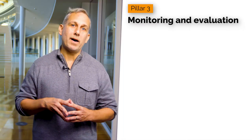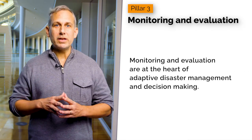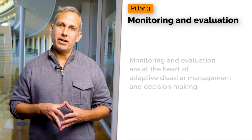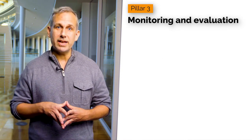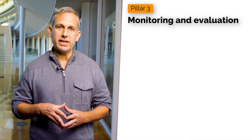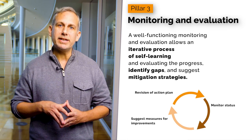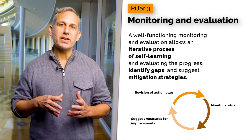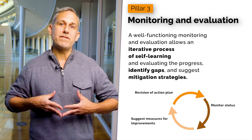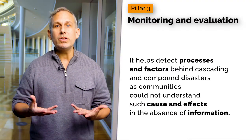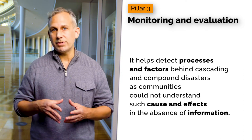Pillar 3: Monitoring and Evaluation. Monitoring and evaluation are at the heart of adaptive disaster management and decision-making. They are critical to understand the risk landscape, which is always changing and evolving in the case of cascading and compound disasters. A well-functioning monitoring and evaluation allows an iterative process of self-learning, evaluating progress, identifying gaps, and suggesting mitigation strategies. It helps detect processes and factors behind cascading and compound disasters, as communities cannot understand such cause and effects in the absence of this information.